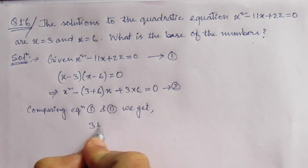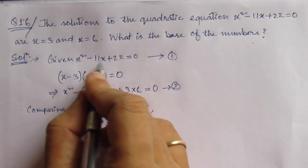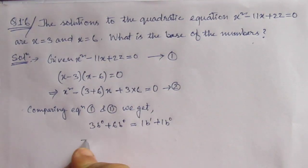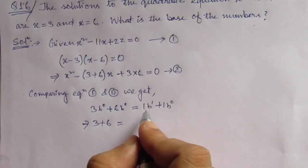3b⁰ + 6b⁰ equal to 1b¹. This is 11 plus 1b⁰. This is 3 plus 6 equal to 1b, which is b plus 1.